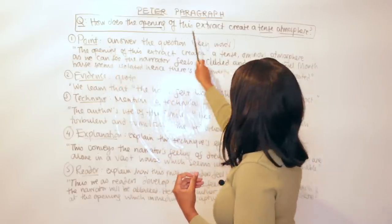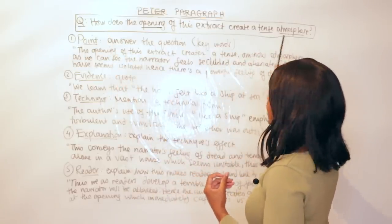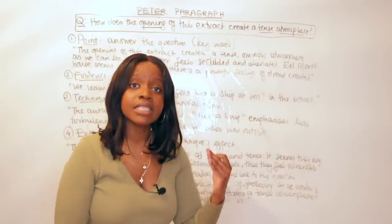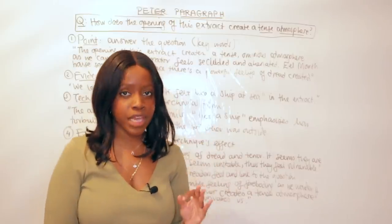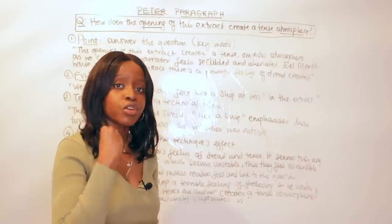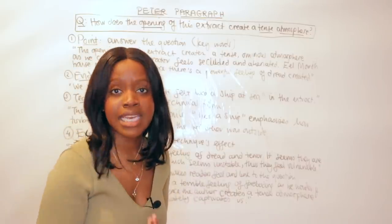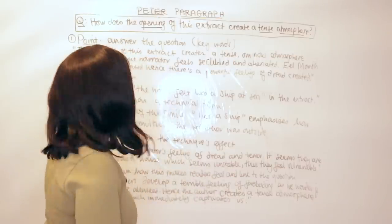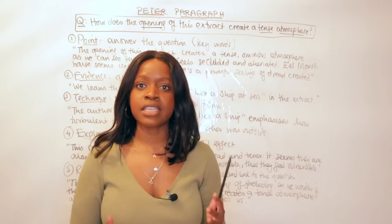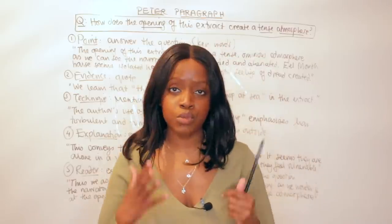Now the question was: How does the opening of this extract create a tense atmosphere? You will notice within this question I've already underlined some words. These are what we call keywords—the most important bits of the question that you need to directly address in your answer to show your teacher or your examiner that you understand the assignment. The keywords are 'opening,' 'tense,' as well as 'atmosphere.' These are the stuff that's not so obvious within the question that you need to directly address.